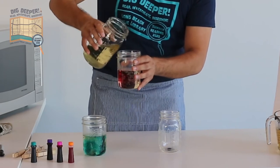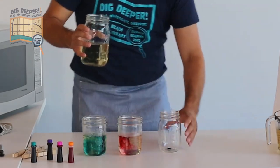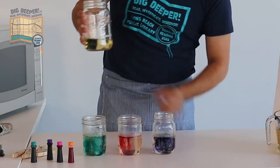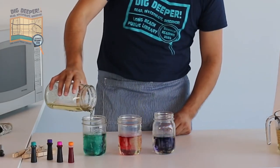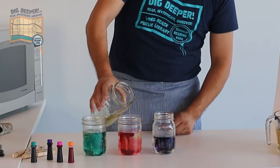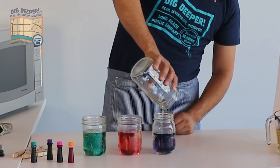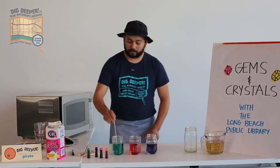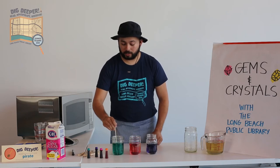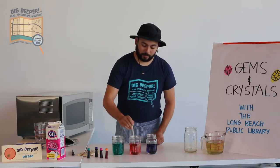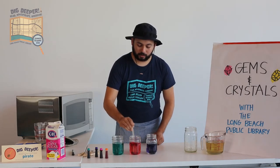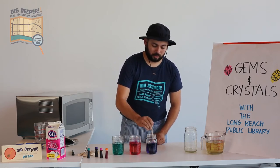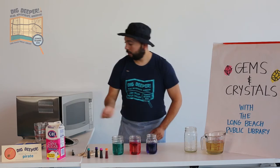Next, carefully pour the solution — since it'll still be pretty hot, get your grown-up to do this — into the jars. I'm going to start with a cup in each jar and then fill them up with whatever is left over. You can see the food coloring start to dissolve within the solution and produce some pretty cool colors. I'll take the same stick I was using to stir and just stir this around a little bit to evenly distribute the color within each of the solutions. You can always rinse off the stick between colors to avoid mixing. Now you can see the different colors are really evenly distributed in the solution.